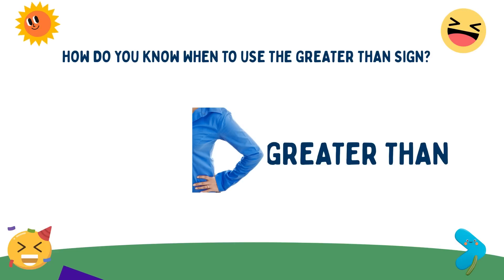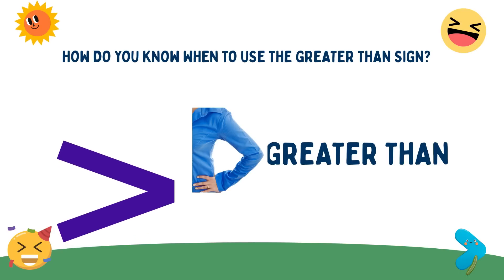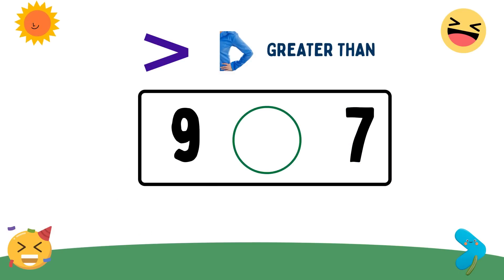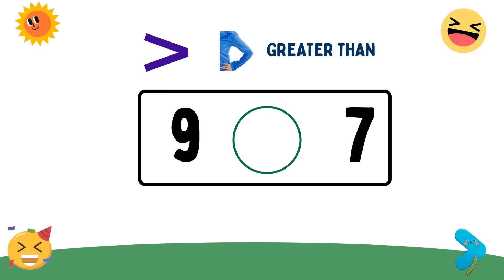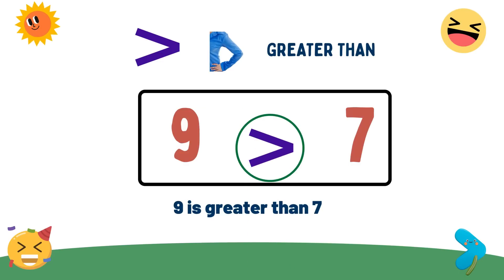How do you know when to use the greater than sign? Let's find out. Let's say we have these two numbers: 9 and 7. 9 is the first number and 7 is the second number. We use greater than when the first number is greater than the second number. Therefore, 9 is greater than 7.